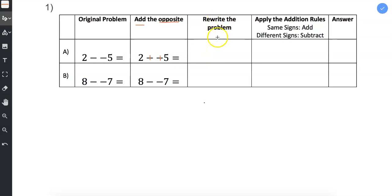And then we rewrite the problem in this column: 2 plus a positive 5 is the same as writing 2 plus 5. So 2 minus a negative 5 became 2 plus 5.